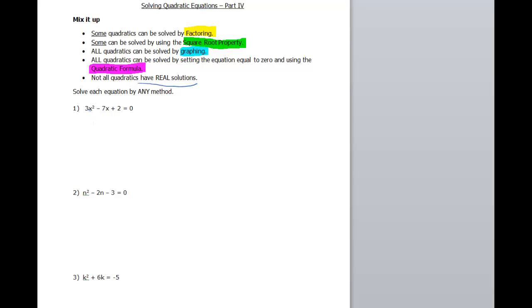The first equation is 3x squared minus 7x plus 2 equals 0. This one I believe can be factored. Using the square root property doesn't make sense because I see an x squared here but I also see an x. With that method, you only want to have one square. So that one doesn't make sense here. Since I have to pick one, I'm going to start with factoring.